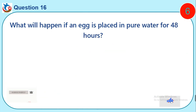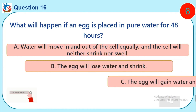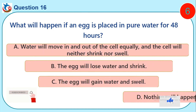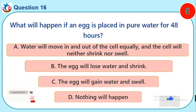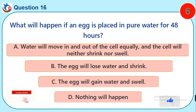Question 16. What will happen if an egg is placed in pure water for 48 hours? A. Water will move in and out of the cell equally and the cell will neither shrink nor swell. B. The egg will lose water and shrink. C. The egg will gain water and swell. D. Nothing will happen.